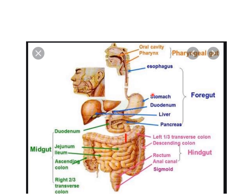The foregut derivative includes the oral cavity, pharynx, esophagus, stomach, and duodenum up to the second part where the bile duct opens, and the liver and pancreas. The midgut derivative extends from the second part of the duodenum to the jejunum, ileum, ascending colon, and right two-thirds of the transverse colon — supplied by the superior mesenteric artery. The hindgut is derived from the left half of the transverse colon, descending colon, sigmoid colon, rectum, and anal canal — supplied by the inferior mesenteric artery.